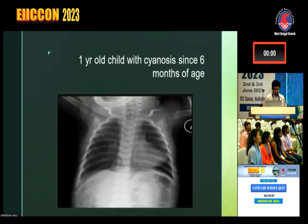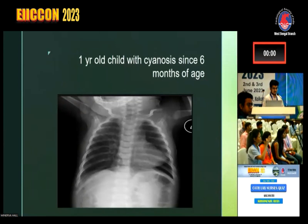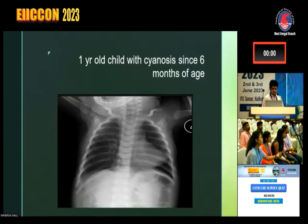A one-year-old child with cyanosis since the child was six months of age. What is this classical X-ray showing? Dextrocardia. Why dextrocardia? This side is left, this side is right — is it not dextrocardia?